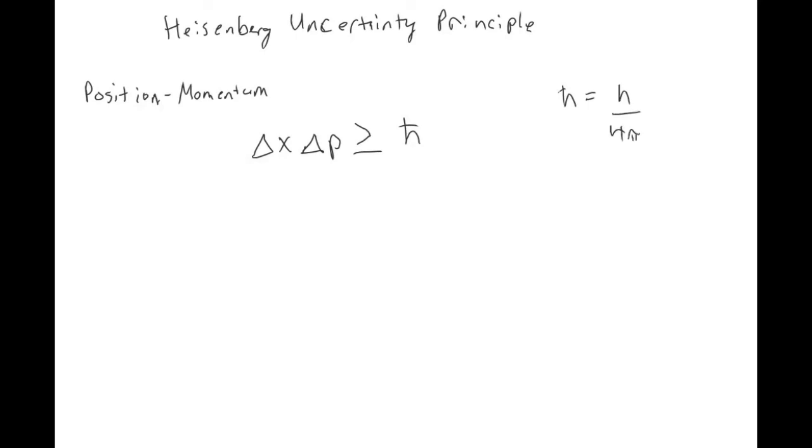H bar is just the regular Planck's constant divided by four pi. Physicists are lazy, so instead of writing h over four pi over and over again, they just made up a new variable. It's called h bar because it's got a bar through the stem of h.